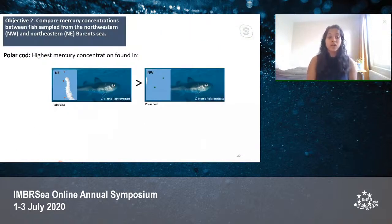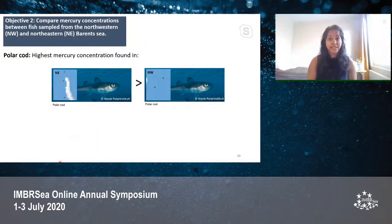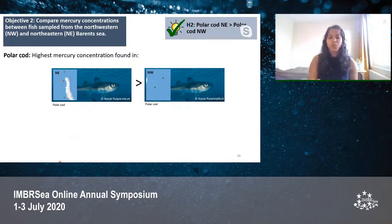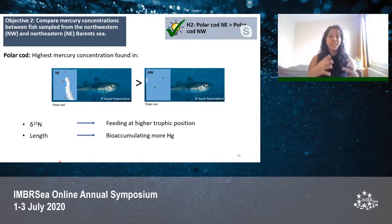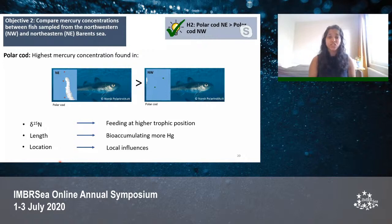For polar cod, individuals from the northeast were found to have higher mercury concentrations than those from the northwest, similar to Atlantic cod and in accordance with our hypothesis. Polar cod from the northeast had larger delta-15N values, showing it was feeding at a higher trophic position and thus biomagnifying more mercury. It was also found to be larger, suggesting it may have been older and bioaccumulating more mercury. The last contributing reason was location itself — variations in local influences such as pH, dissolved organic carbon, oceanic processes, or local sources of mercury could explain the differences observed.